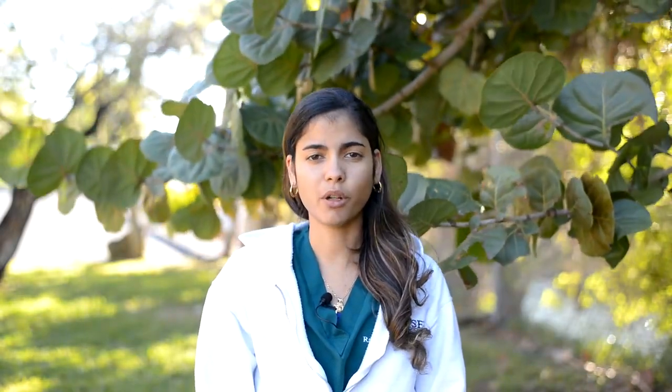This creates a vacancy in the K-shell of the atom. To fill this vacancy, an electron from the outer shell will fill this vacancy and they will keep jumping until the atom is stable, like in characteristic radiation production. But this low energy X-ray does not exit the patient — it is absorbed completely.